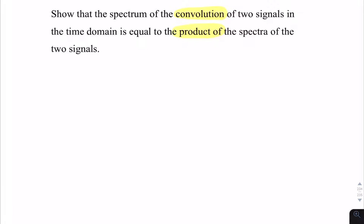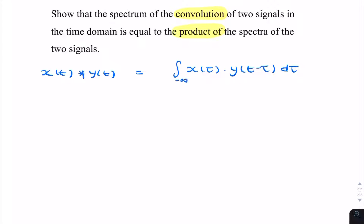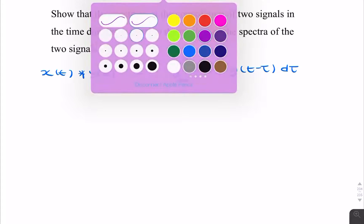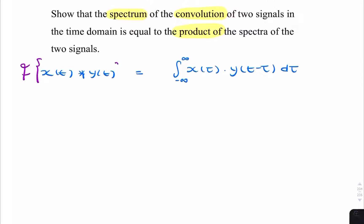We start with the convolution. Say we have two signals, x(t) and y(t) in the time domain. Their convolution is, by definition, the integral from minus infinity to infinity of x(τ) times y(t minus τ) dτ. The question asks for the spectrum of that — the Fourier transform — so we're looking for this in the frequency domain. We apply the definition of the Fourier transform, which is an integration with e to the minus jωt dt.